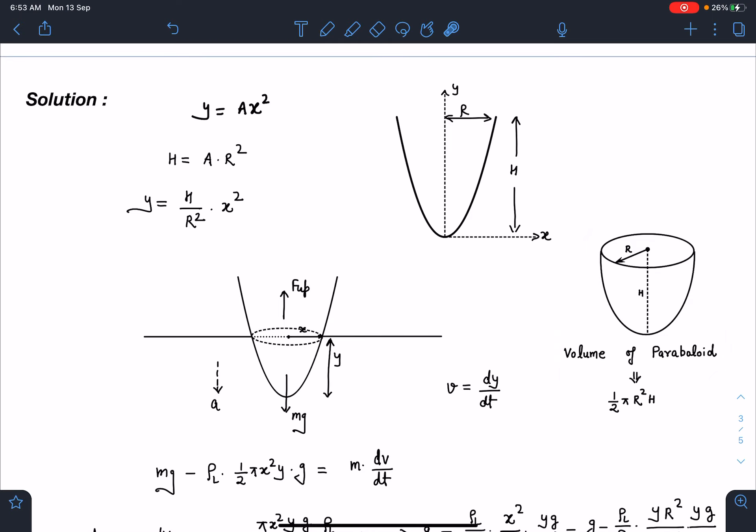Volume of paraboloid of height h and radius r it is half pi r square h. It is quite similar to the cone formula but in case of cone it is one by three and you can see from here itself you can guess. So this volume will be more than cone volume. So and it is easy to remember half pi r square h.